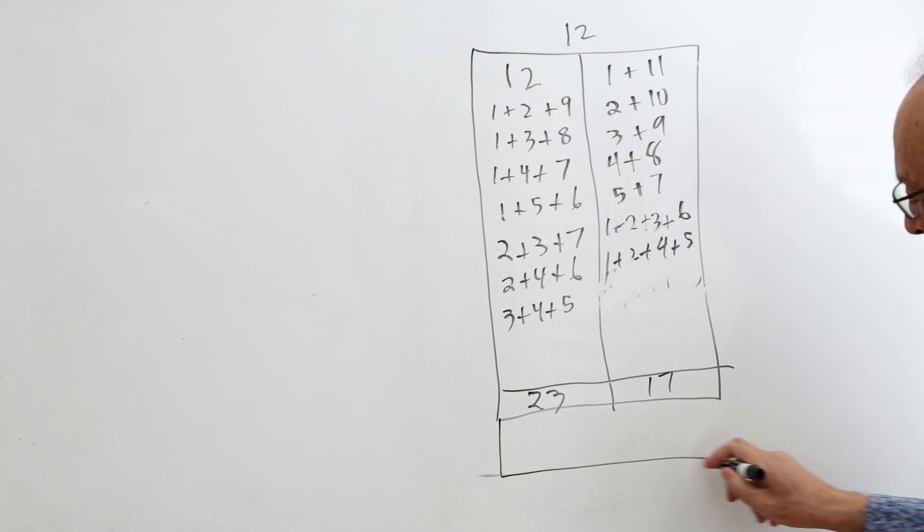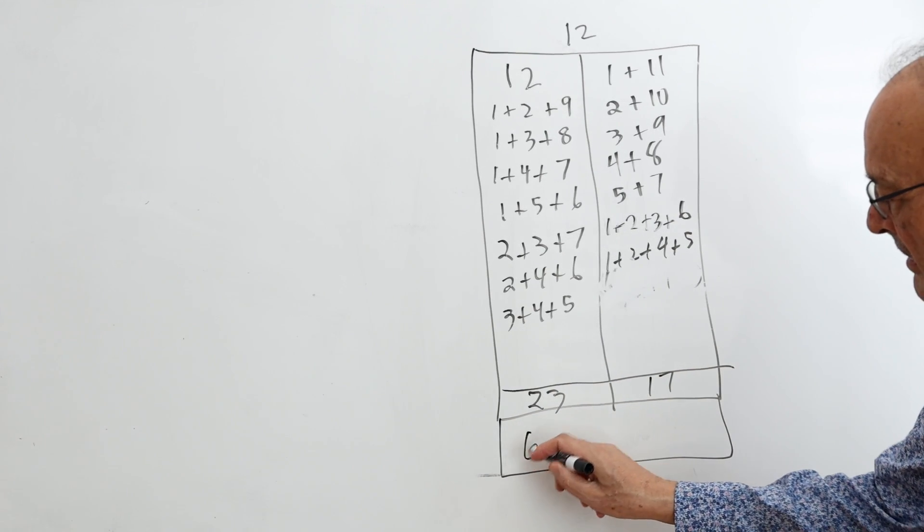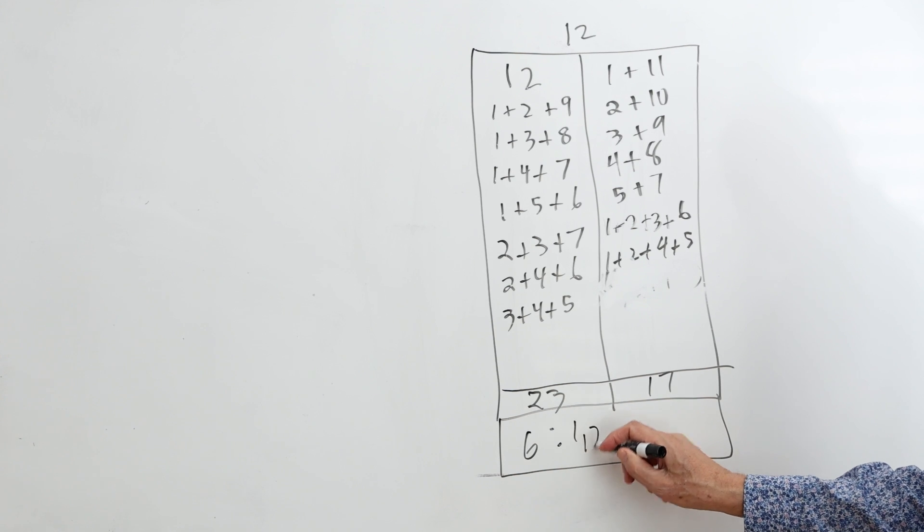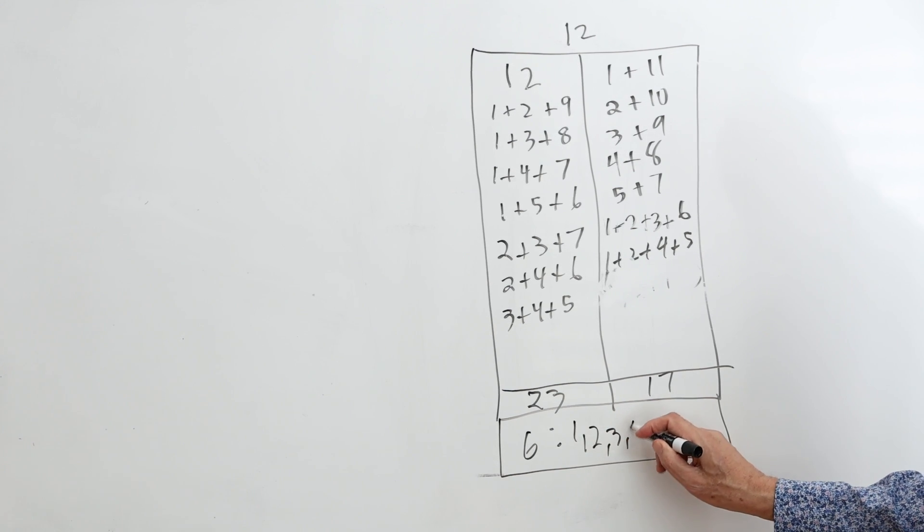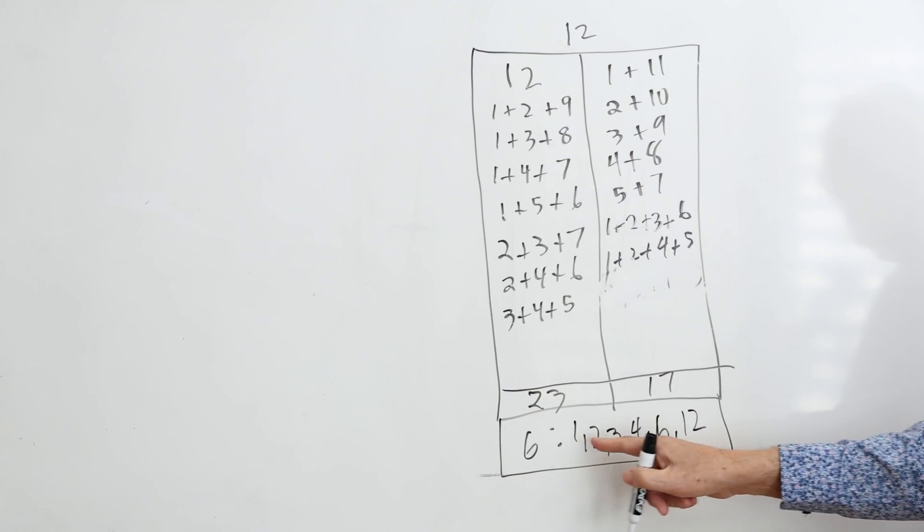So if I do the takeaway, 23 minus 17 is 6. So that would be, the factors of 12 would be 1, 2, 3, 4, 6, and 12. So 12 has these 6 factors.